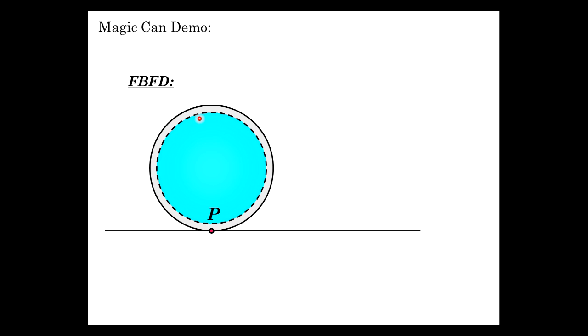There's going to be a string wound around the can itself which is this inner diameter here. And let's do a free body first of all. MG straight down.